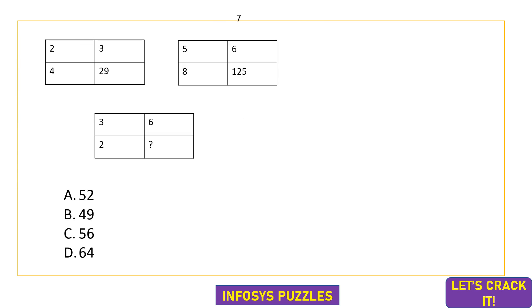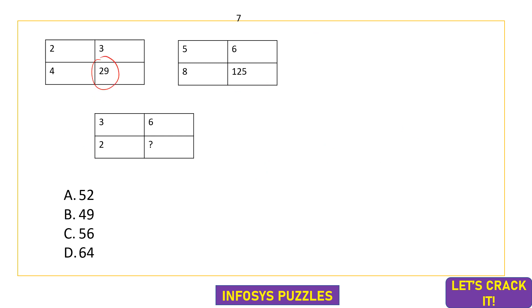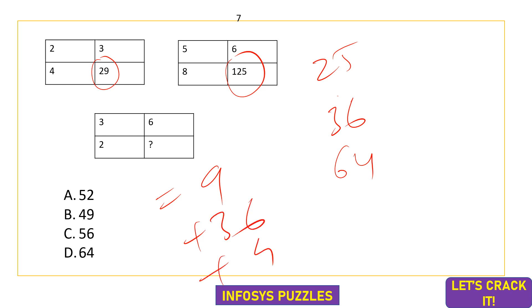The seventh question has three boxes with the same logic. For the first box: 2, 3, 4 → 2²+3²+4² = 4+9+16 = 29. For the second box: 5, 6, 8 → 5²+6²+8² = 25+36+64 = 125. For the third box: 3, 6, 6 → 3²+6²+6² = 9+36+4 = 49. Option B is the correct answer. The logic is simply the sum of squares of all other values in the table.